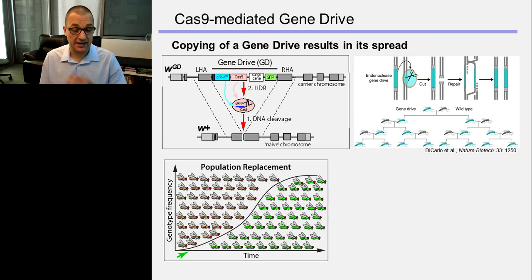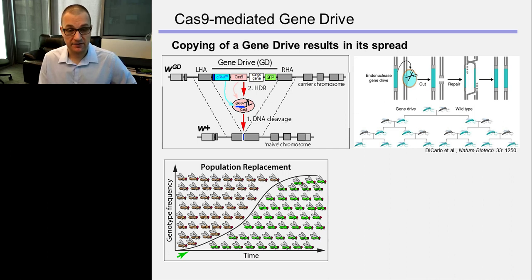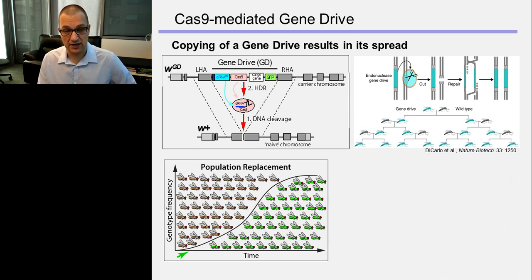This slide shows the actual structure of a gene drive sitting inside the Drosophila white gene on a carrier chromosome. The gene drive contains guide RNA, Cas9, GFP (green fluorescent protein so we can track which flies carry the gene drive), and a cargo gene. The guide RNA and Cas9 are expressed, go to the naive chromosome, and cut it. During the repair process, the whole gene drive is copied via homology-directed repair (HDR). Cas9 acts as an endonuclease guided by the guide RNA to a specific site, it cuts, repair takes place, and the gene drive spreads.